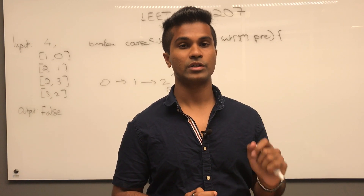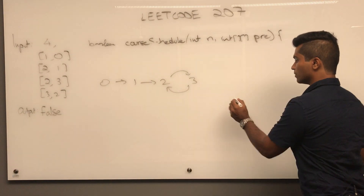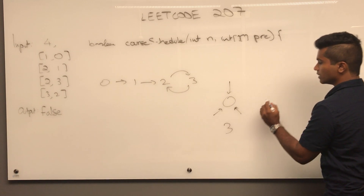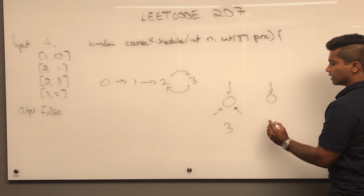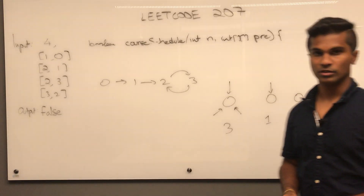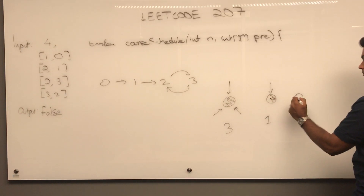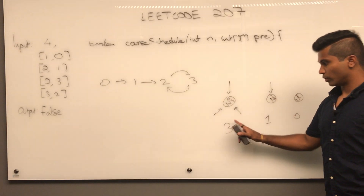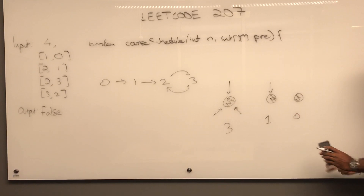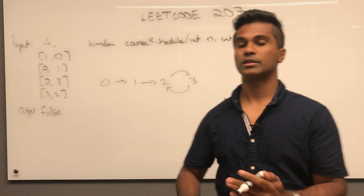Usually BFS has a visited set, but here we use something called in-degree, which is the number of edges pointing into a node. For example, a node with three arrows going in has in-degree three, one edge going in has in-degree one, and zero edges going in has in-degree zero.